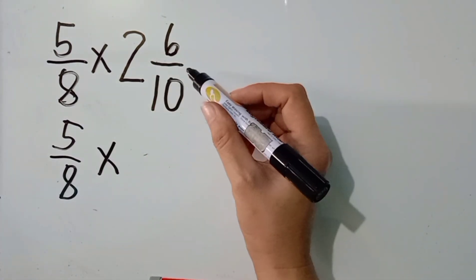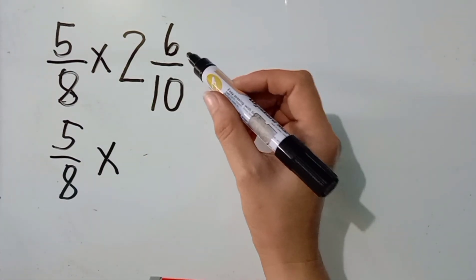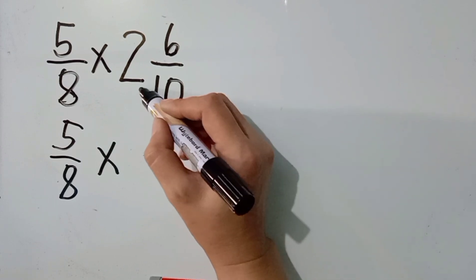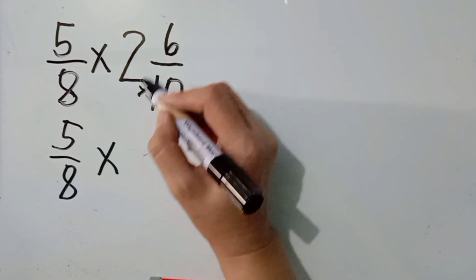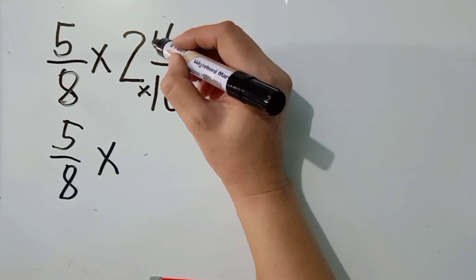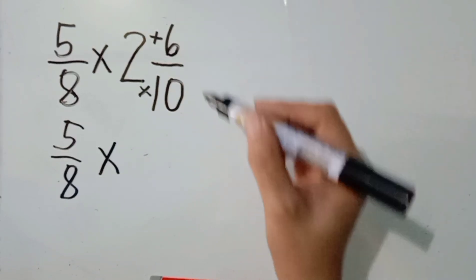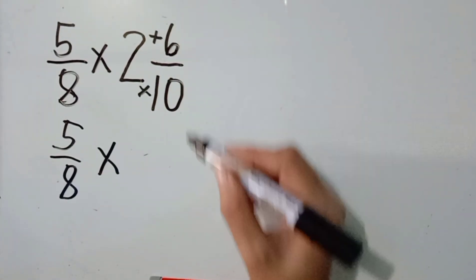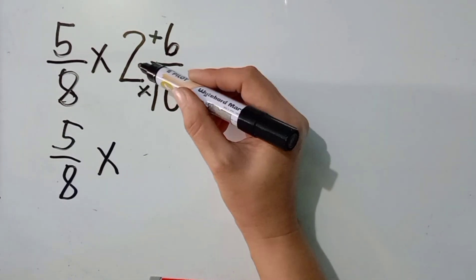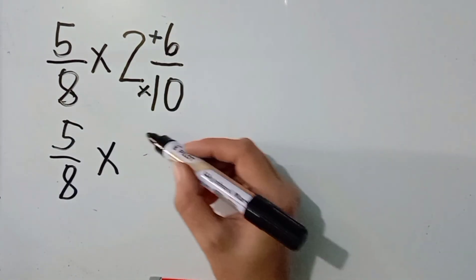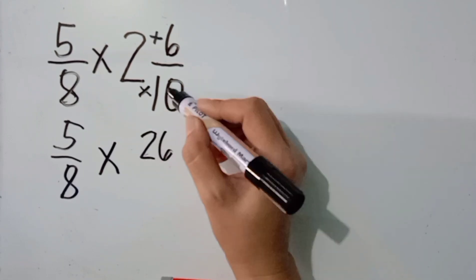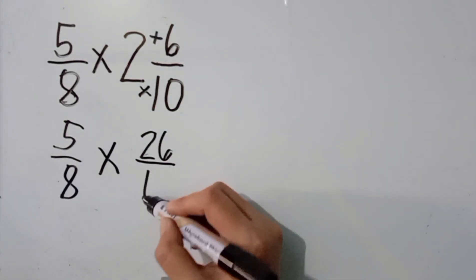Ito lang po ang ating iti-change sa improper fraction — itong mixed number na to. So, anong gagawin natin? Multiply natin ang denominator na 10 sa kanyang whole number na 2, and then the answer i-add naman natin sa 6 na kanyang numerator. So, let us multiply. 10 times 2, the answer is 20. Plus 6, the answer is 26. And then, just copy the denominator niya na 10.